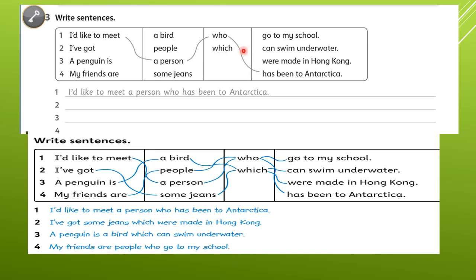Now let's go to page 60 workbook. We will connect sentences with 'who' and 'which' — the relative clause. Number one: I'd like to meet a person — 'who', of course — who has been to Antarctica. Number two: I have got some jeans — the pants — which were made in Hong Kong. A penguin is a bird which can swim underwater. My friends are people who go to my school.